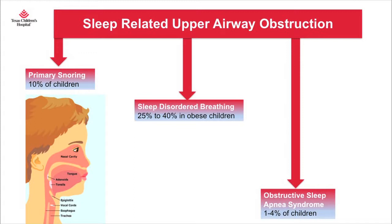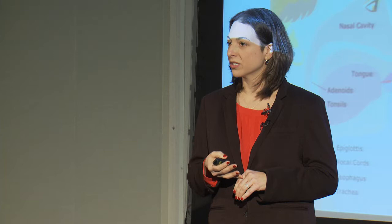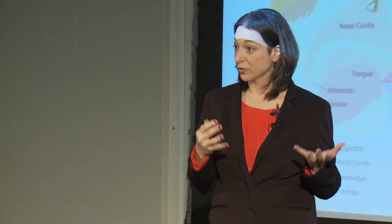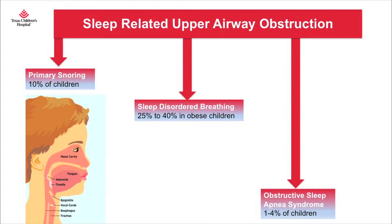Sleep-related upper airway obstruction is a spectrum of disorders starting from just habitual snoring — snoring without obstruction — which occurs in approximately 10% of kids. We see it more often when they have a cold, during allergy season when their noses are congested, or during flu season. As the allergies or cold improve, the snoring typically improves as well.